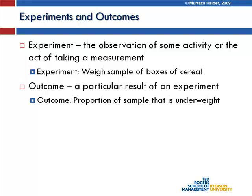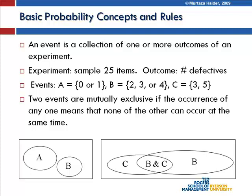The outcome is a particular result. Using the cereal box example, the outcome could be the proportion of the sample that is underweight. If the weight is supposed to be 550 grams, we would determine the proportion of boxes that are underweight. So the outcome would be that proportion, and boxes that are underweight would be considered undesirable and faulty.